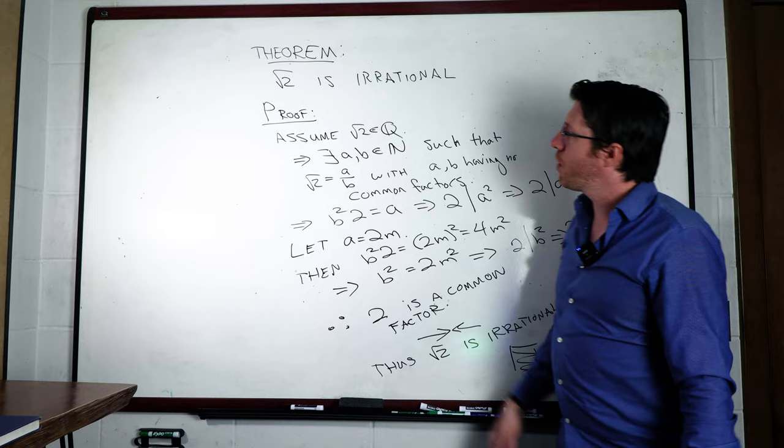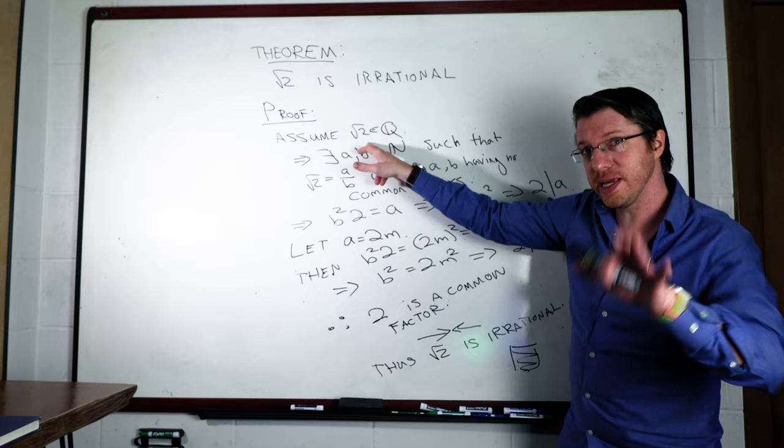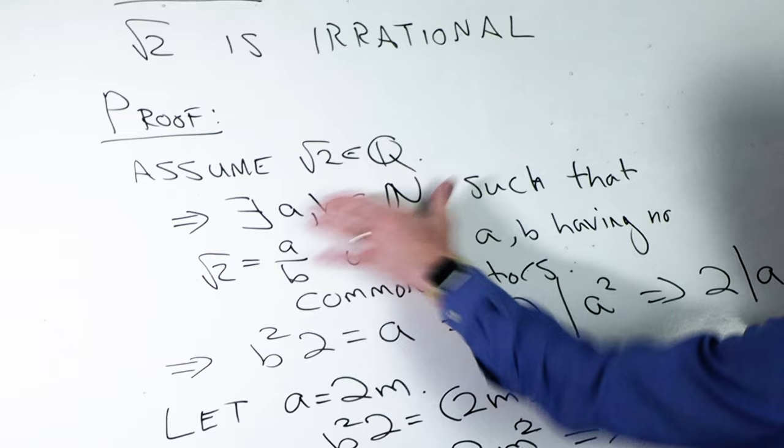Our goal is to show the square root of 2 is irrational. What we do then is we assume by way of contradiction that the square root of 2 is rational. And that means that there exists some natural numbers a and b such that square root of 2 is equal to a over b with a and b having no common factors.